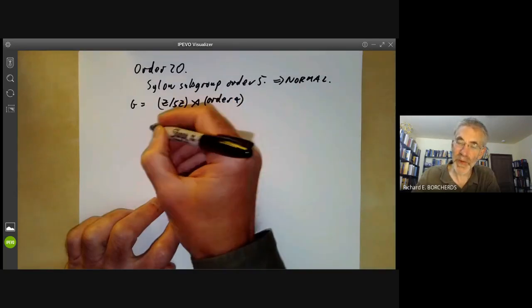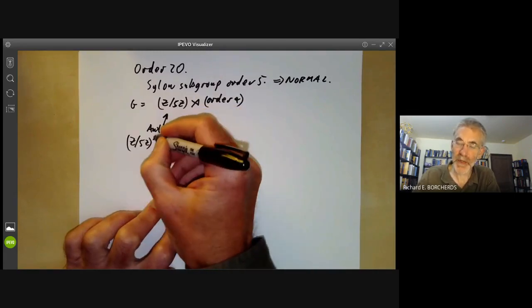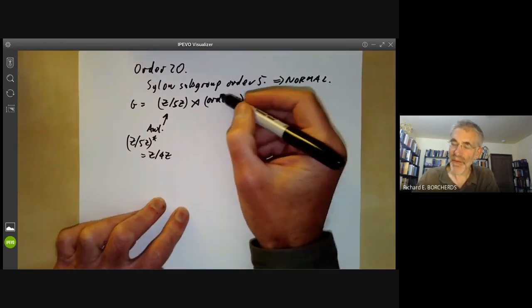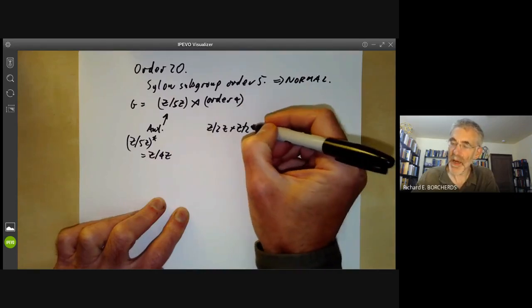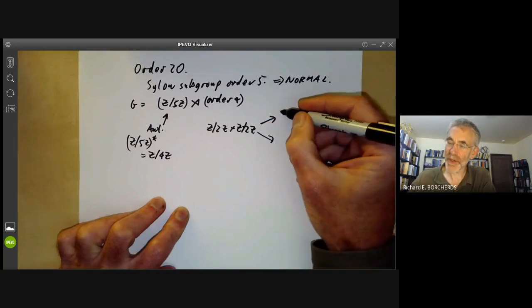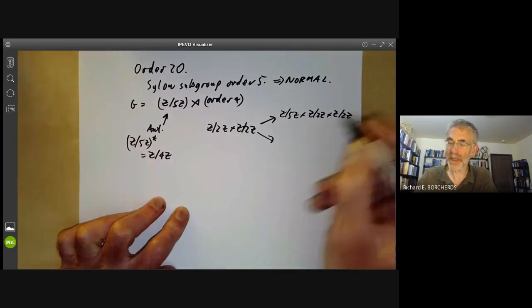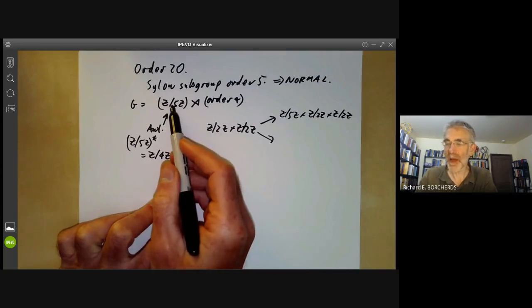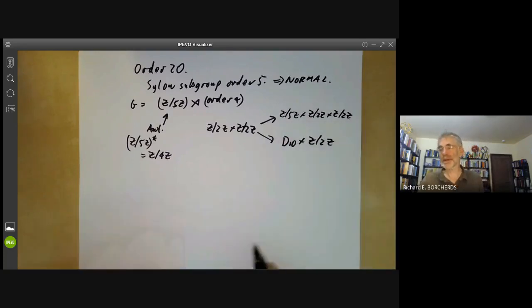The automorphism group of a group of order 5 is Z/5Z* which is Z/4Z. So now if this group of order 4 is Z/2Z × Z/2Z there are two possibilities. First of all the action might be trivial in which case we just get a product Z/5Z × Z/2Z × Z/2Z which is not very exciting. Or we get one of these Z/2Z's might act non-trivially on this and then you can see we just get a dihedral group of order 10 times a group of order 2 which again is nothing to get excited about.